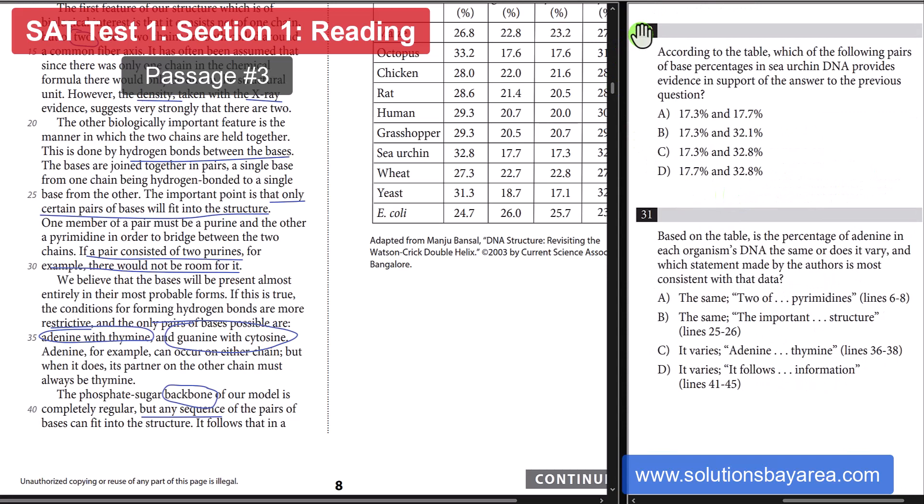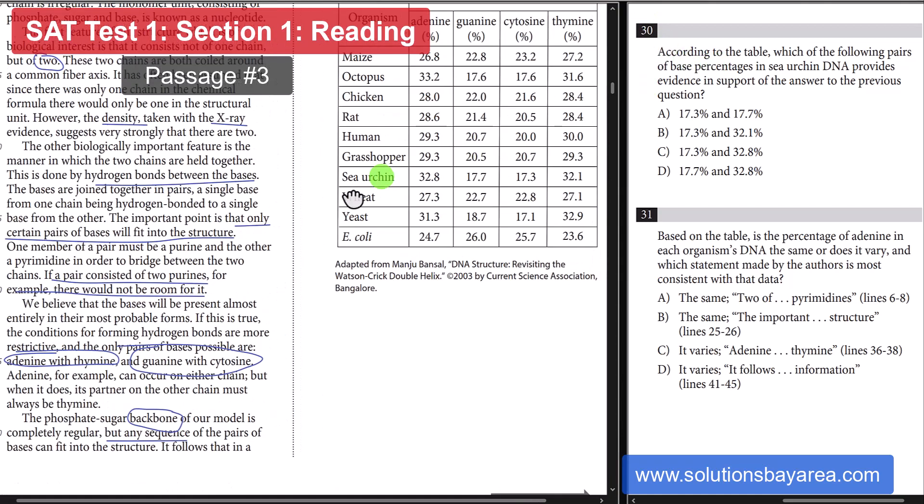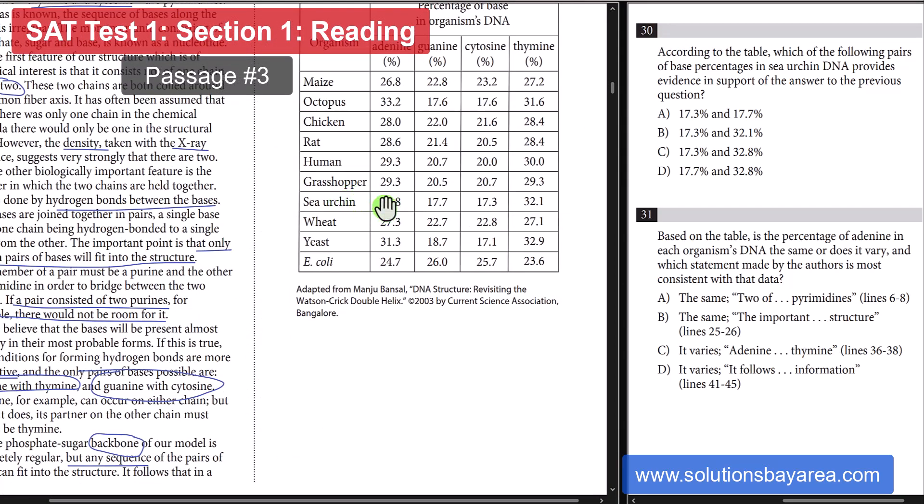Question number 30. According to the table, which of the following pairs in sea urchin DNA provides evidence in support of the answer to the previous question. So, we're going to look at the sea urchin here. The only things that match up to the 32.8, 32.1, or the 17.7 and the 17.3. So, that is going to be right there. So, those match up. You're looking at an answer of A.